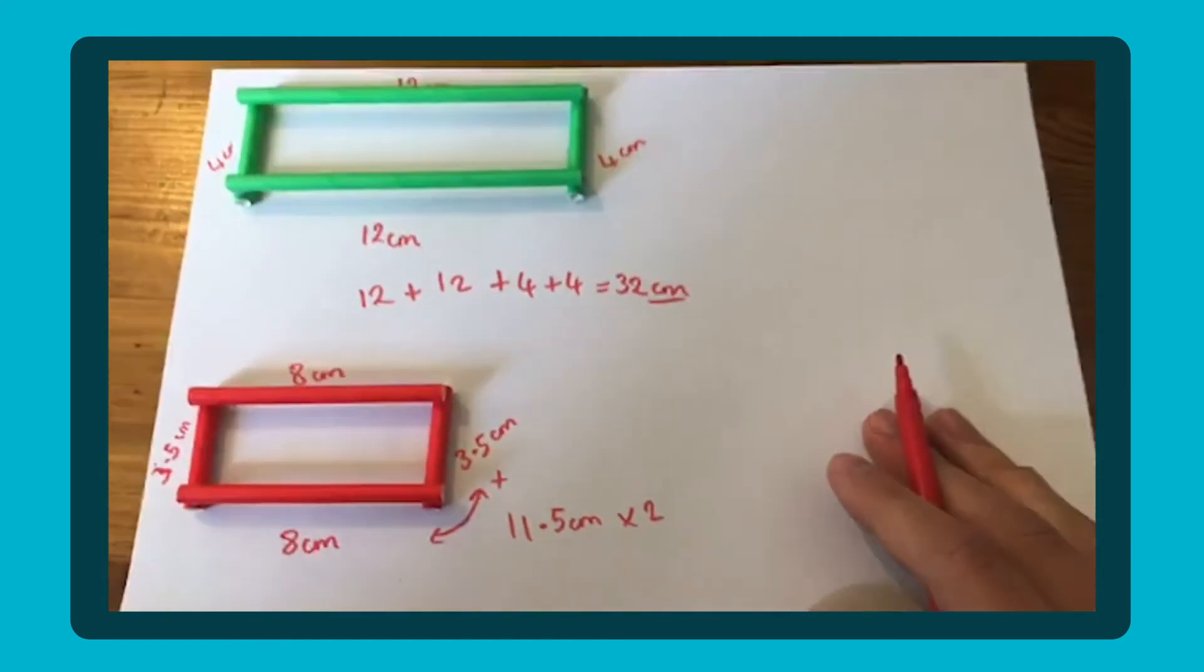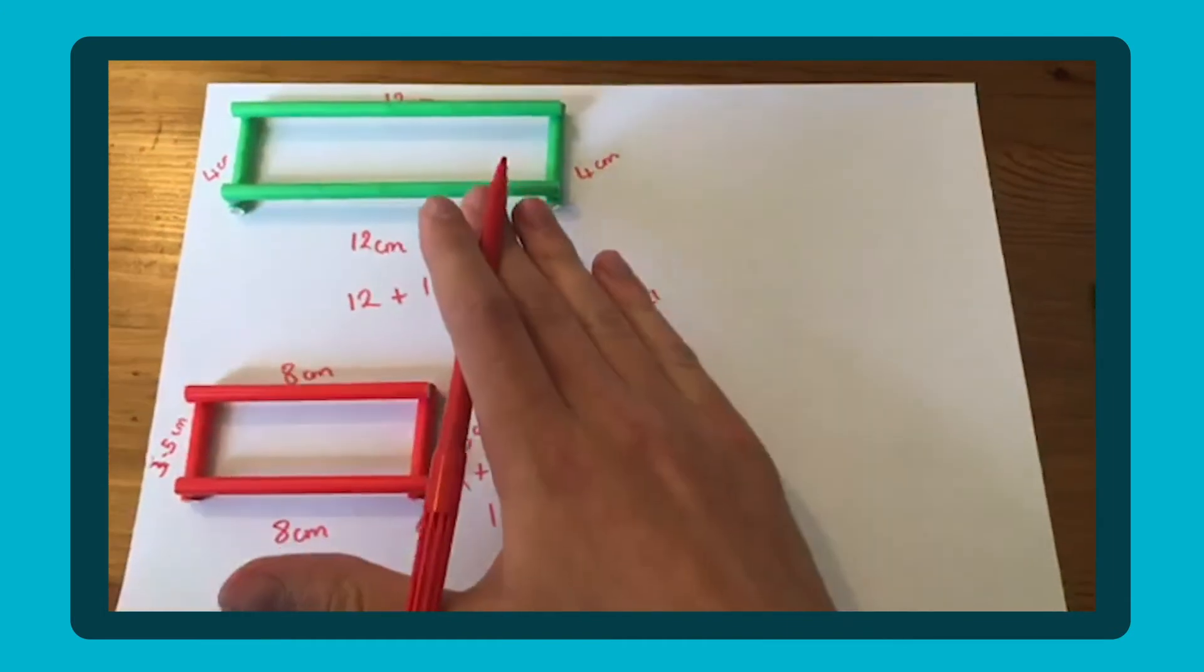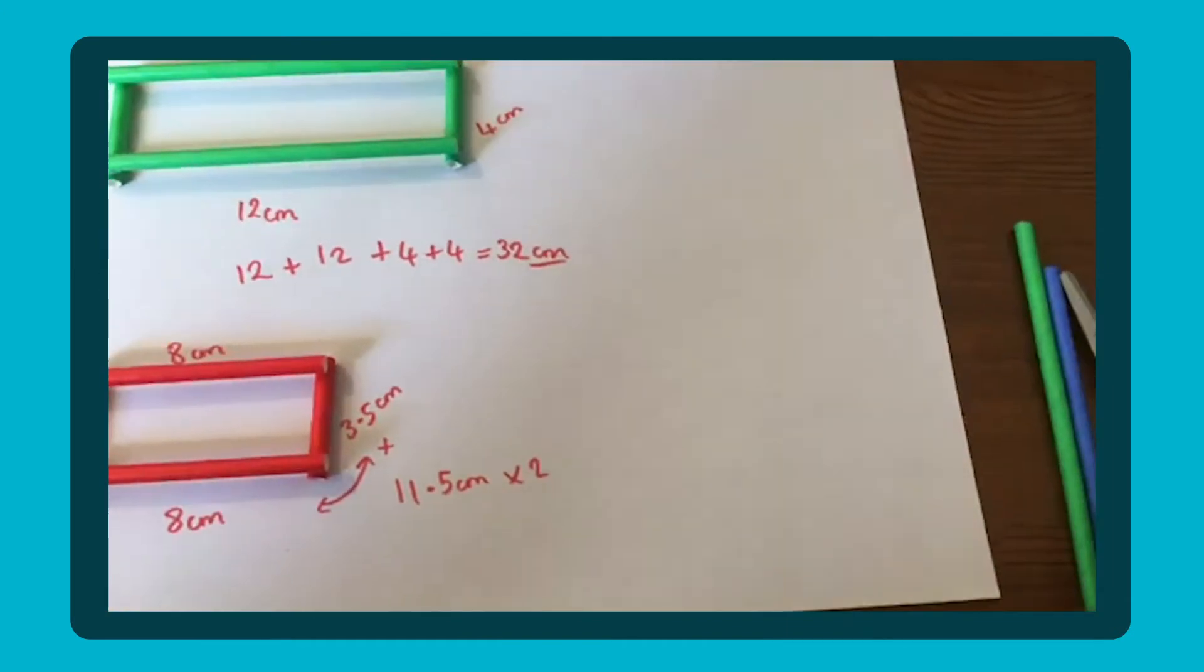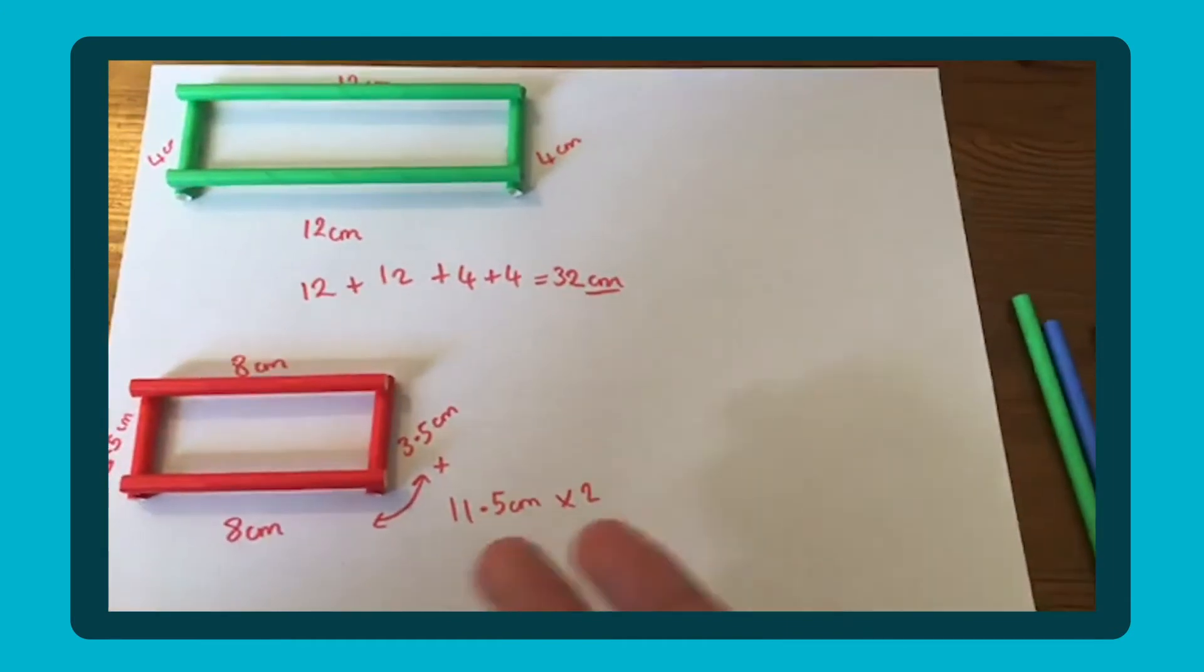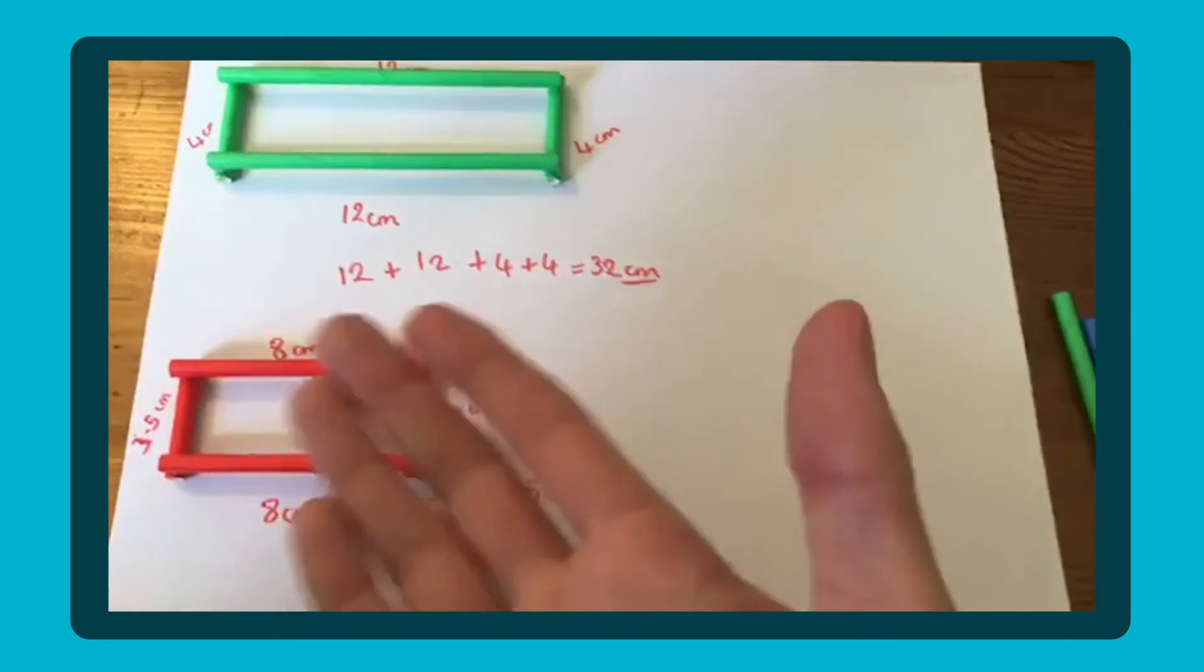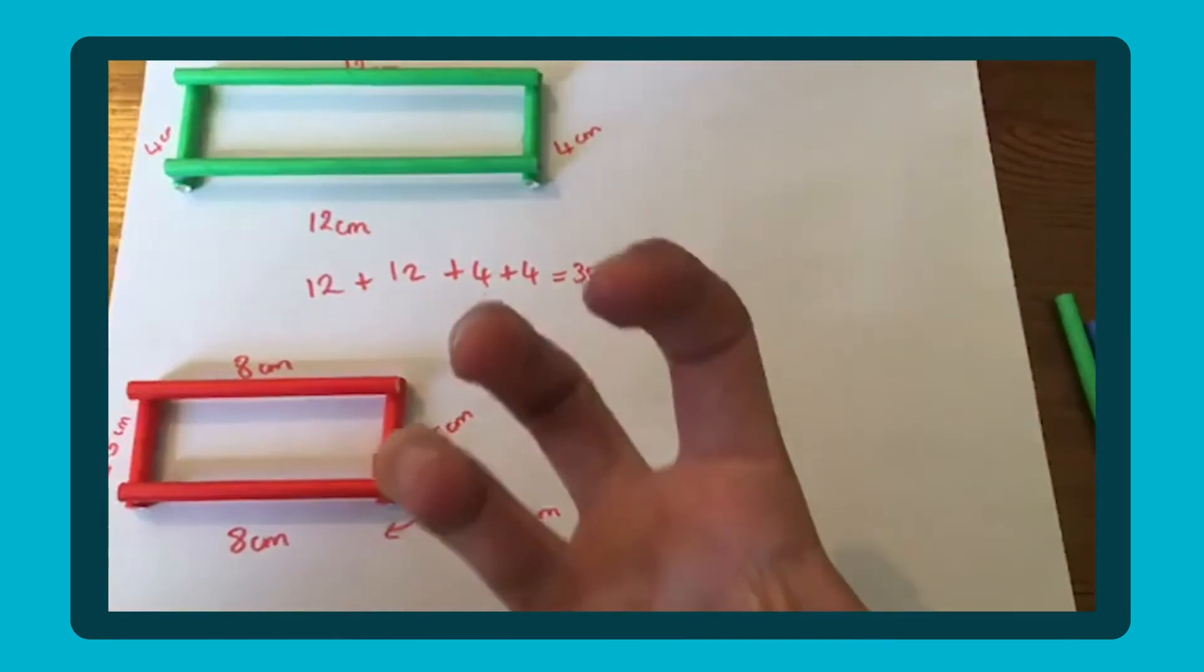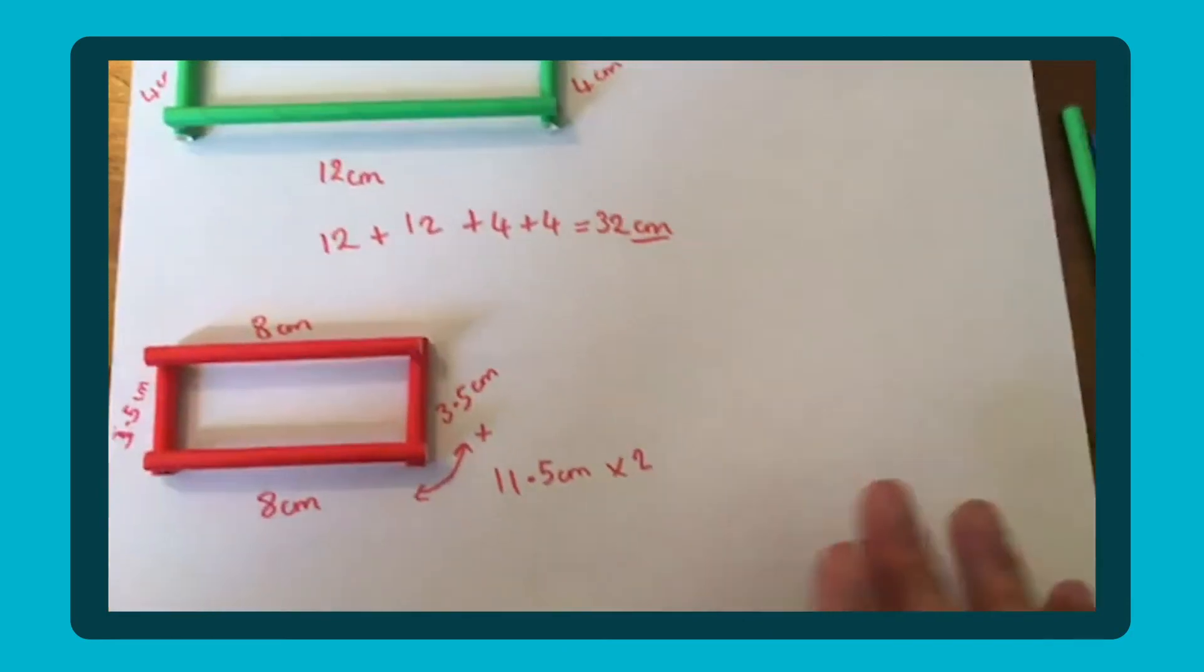So that's one thing you could do. And remember, you could use string as well. I suppose you could cut up paper as well, different colored pieces of paper. But I find straws works quite well, nice and colorful, very bright and visual for your child to work with.